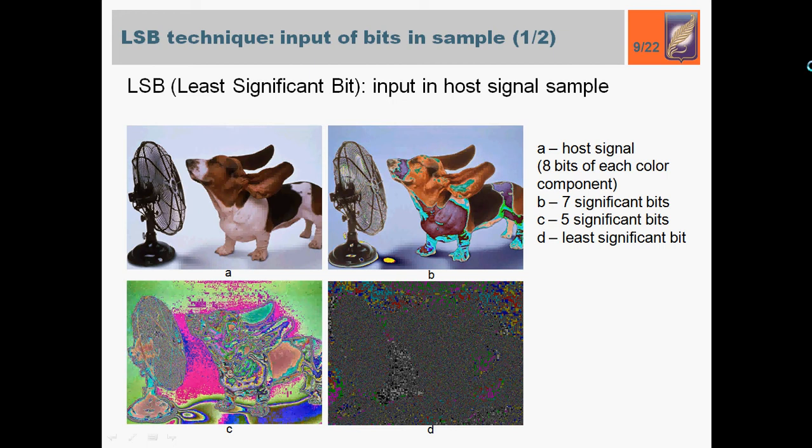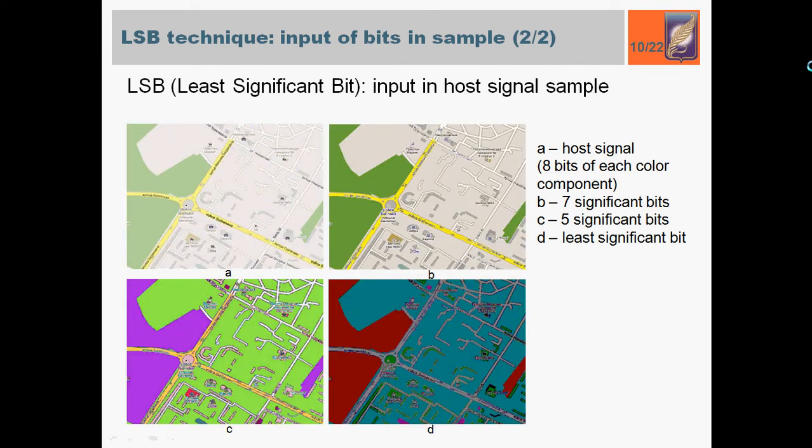It assumes that LSB is noise and it's possible to embed information by replacing the host signal's significant bits by bits of secret message. Method often works with the raster images presented in a format without compression, for example, GIF or BMP. The main drawback is high sensitivity to small distortion in the container. But on this slide is shown that for some host signals, like image map, LSB doesn't look like noise and contains a lot of information about the sample. The image that is built from LSB only is presented in picture D.